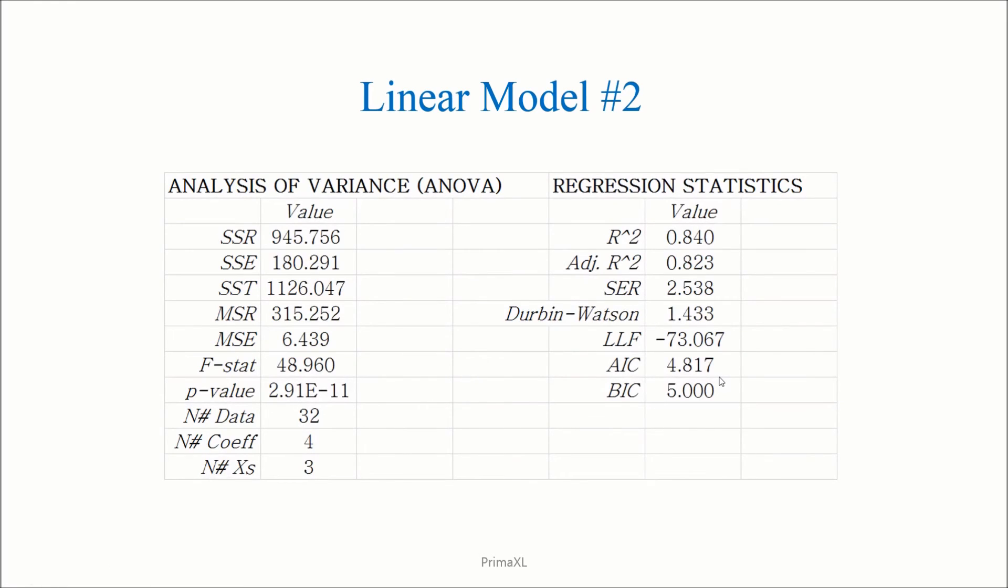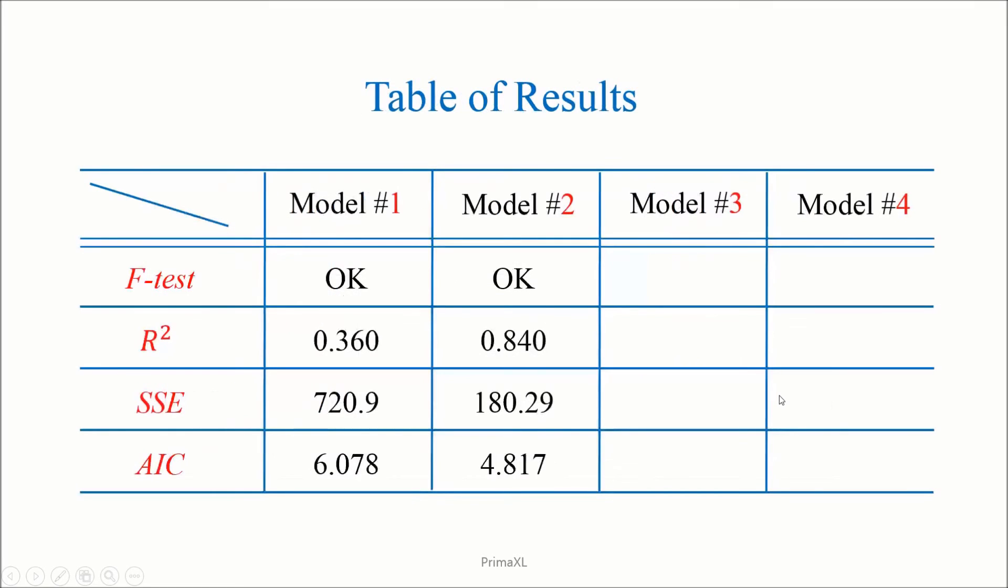Instead of going back to the spreadsheet and repeat all over, here we just show the diagnostic result. We go to our summary table. We can notice that R-square got much closer to 1 in comparison with model number 1. SSE and AIC both have decreased. So, we are more confident that model number 2 is an improvement over the first model.